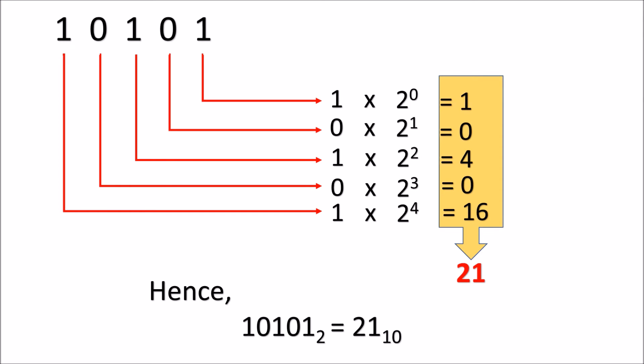The second value, the second number from the right, 0 x 2 to the first power. That is 0. The third value, 1 x 2 square. That is 4.